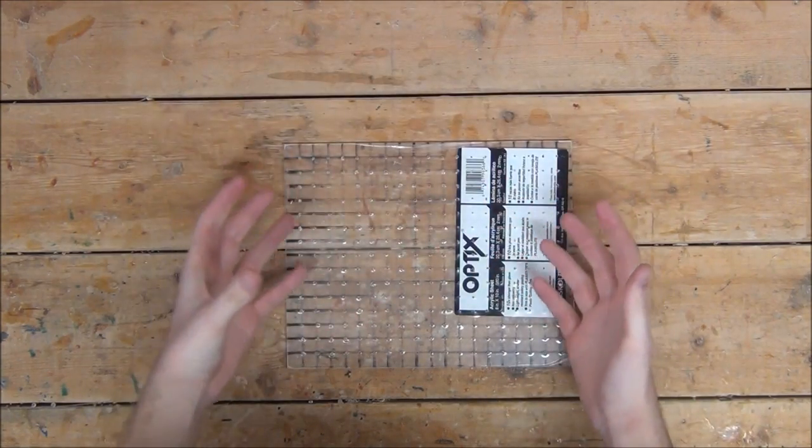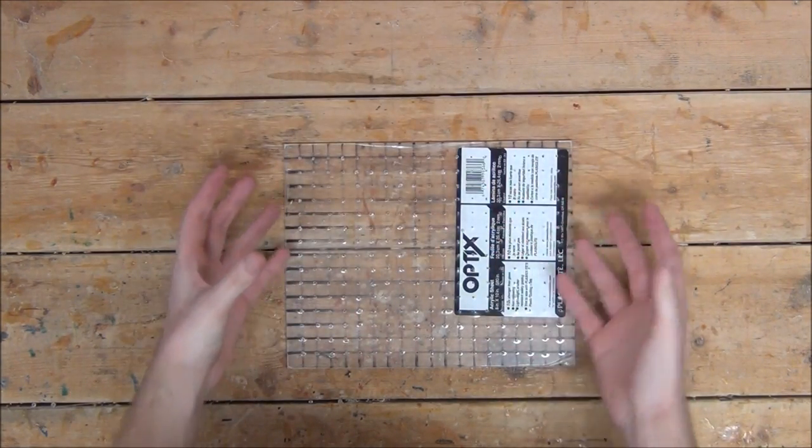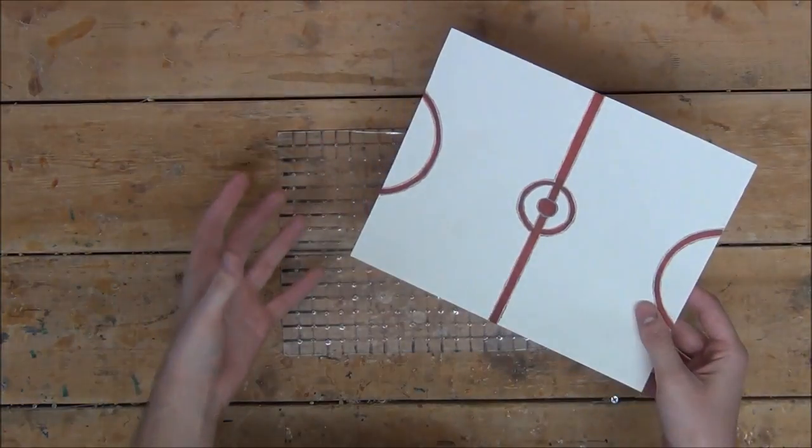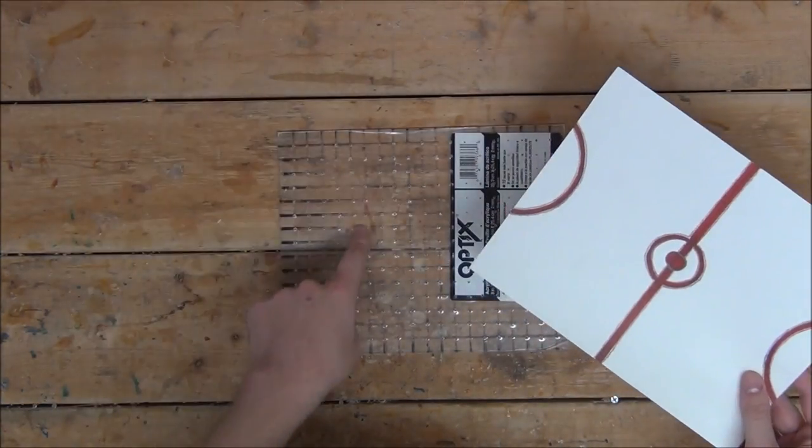I'm then going to take some poster board and cut out a section just large enough to fit underneath our plexiglass, then draw a few goals on it. Once we have that done, we can go ahead and tape it onto the bottom of the glass.